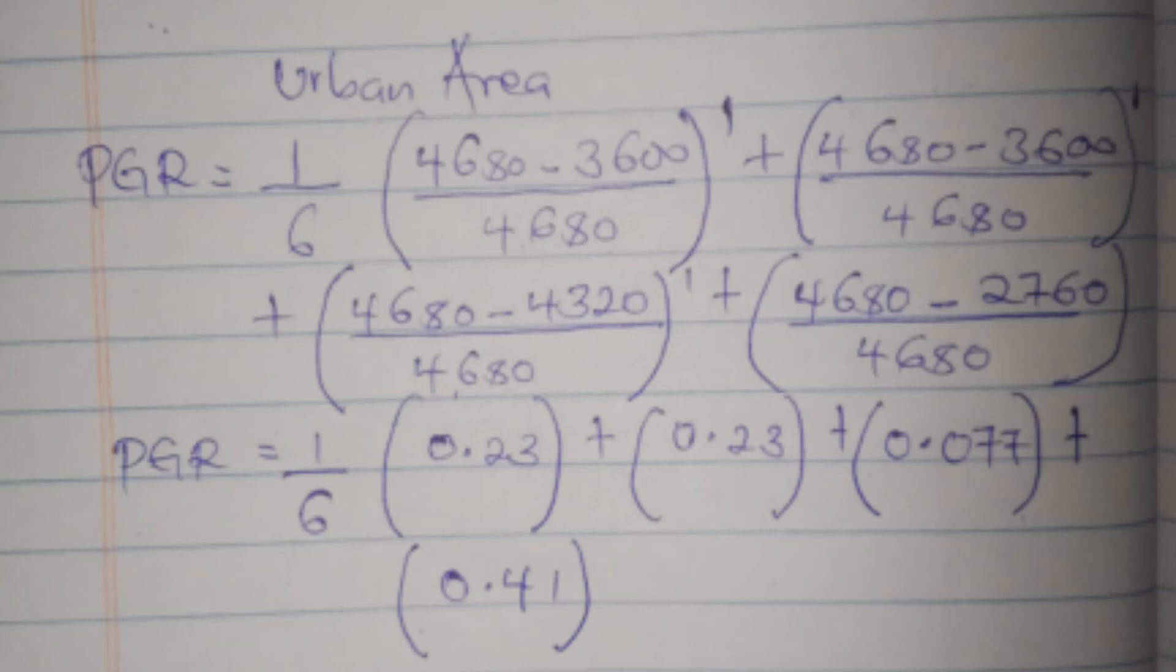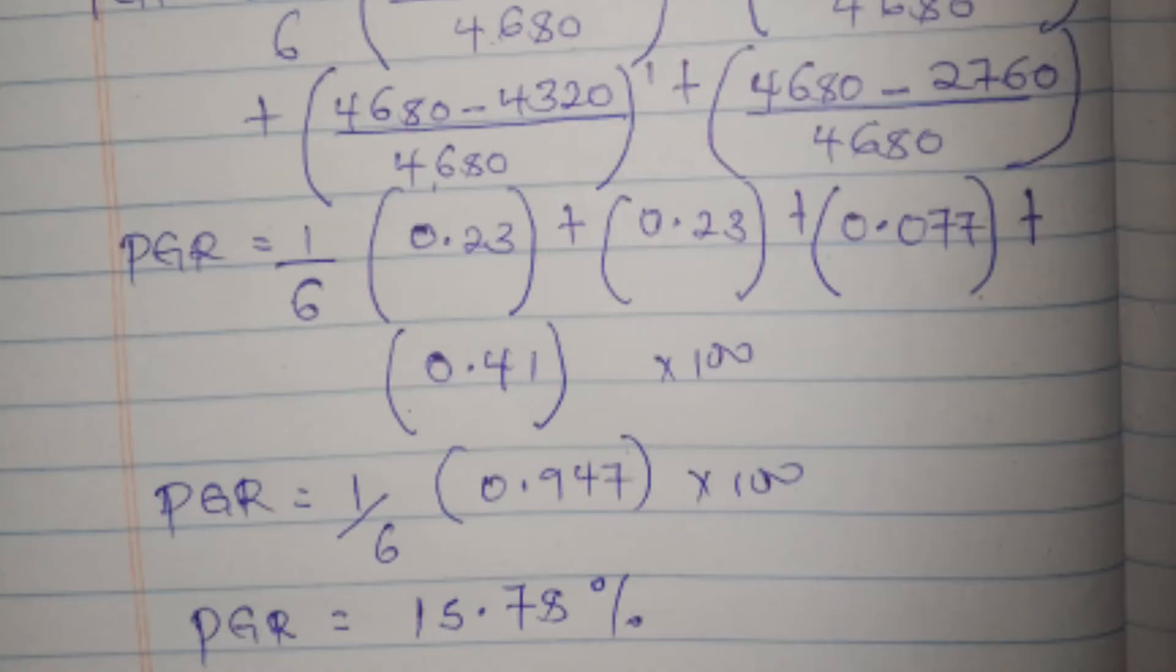We calculate 4680 minus 3600, divide by 4680, you get 0.23. Then you do that for all the brackets. After adding and multiplying everything, the poverty gap ratio in the urban area is 15.78 percent.